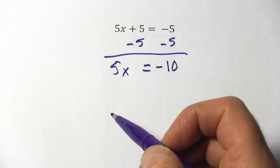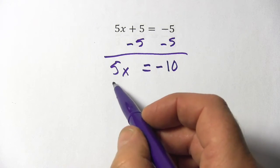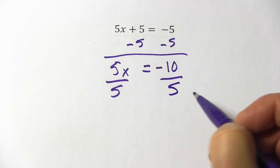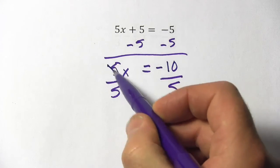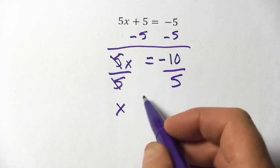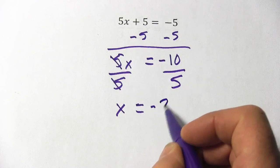So x is being multiplied by 5. I can undo that by dividing by 5 and we'll do that to both sides to keep the equation balanced. Here the 5's cancel leaving just x. And here we have negative 10 divided by 5. That is negative 2.